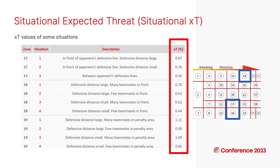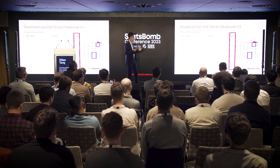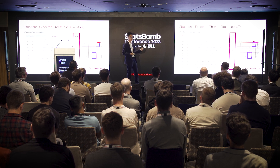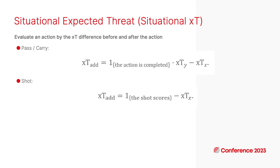From this table we can have many observations. For example, we find that larger defensive distance always leads to larger threat, and more teammates in front of the on-ball player can also lead to larger threat. With this metric, we can evaluate an action by the expected threat difference before and after the action, which is a very standard way in sports analytics.